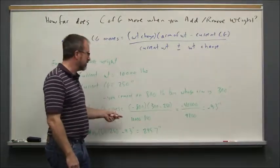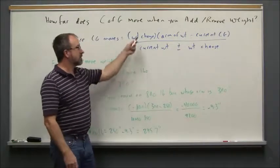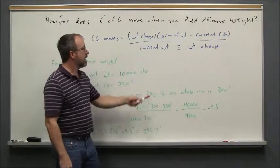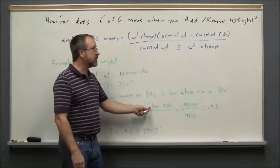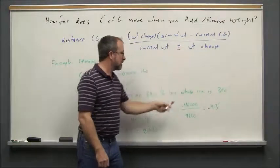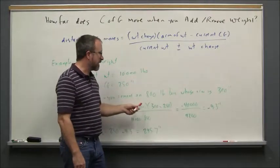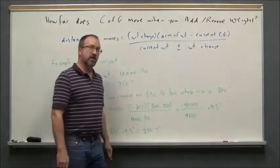Well, the distance it moves: minus 800 is the weight change, we're removing 800 pounds, multiplied by the arm of the weight which was 300 inches minus the current center of gravity is 250 inches. So that's 50 times minus 800, which gives you minus 40,000.